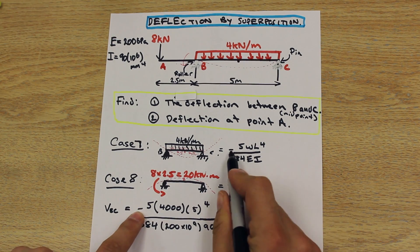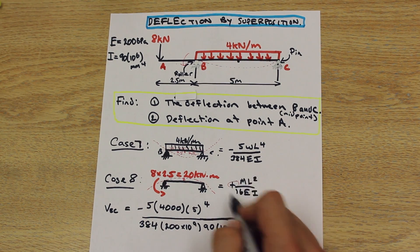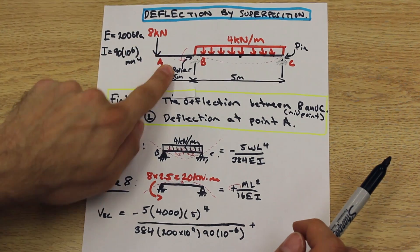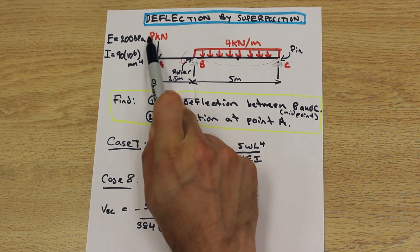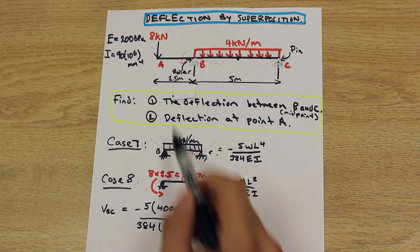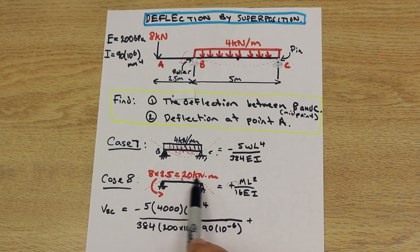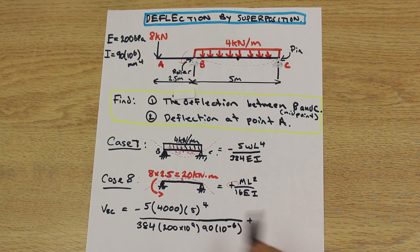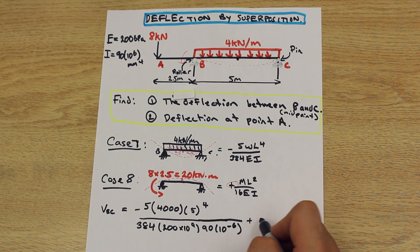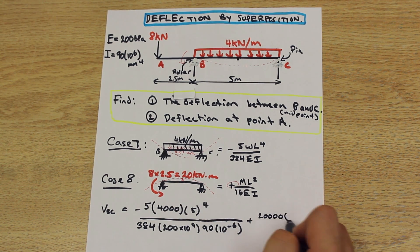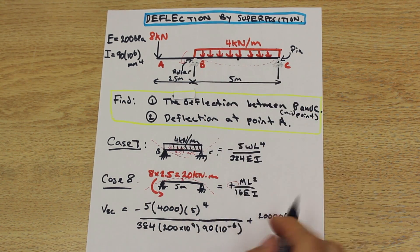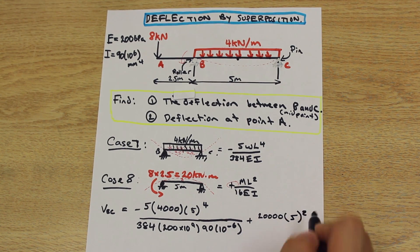And we just need to compute that. But first, we need to consider case 8. So we made sure that we carried the negative sign. Let's take the positive from this one. Now, what's our moment? Well, our moment is 8 kilonewtons down times the distance to point B. So it's 8 times 2.5. And that's going to create a 20 kilonewton meter moment at point B. So let's sub that value in. We're going to change it to newton, so we're going to have 20,000. That's going to be times the length. So the length we're dealing with here is 5 meters. And that's squared over 16.